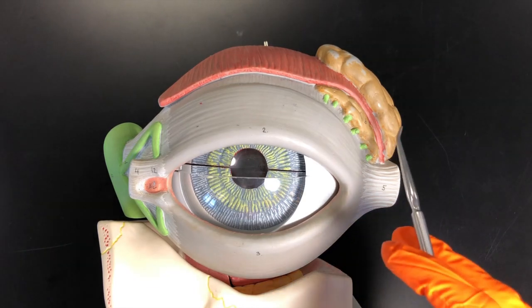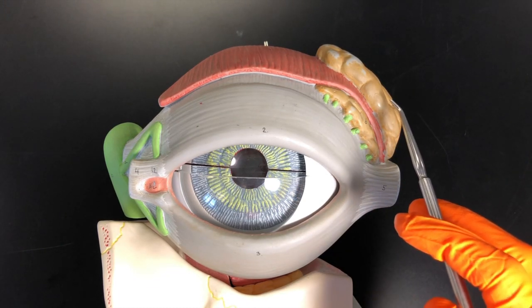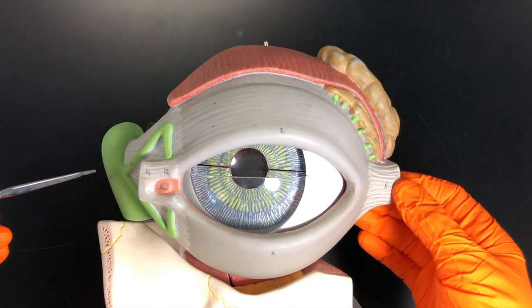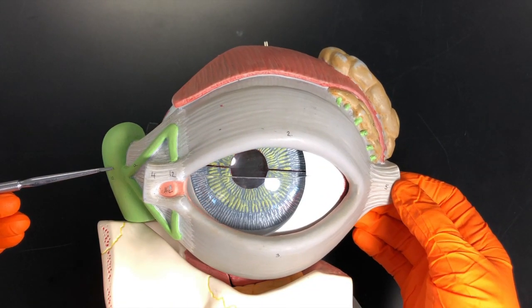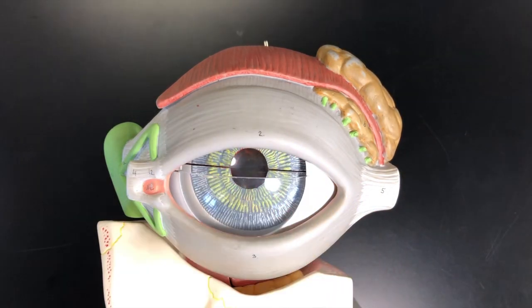So quick question here. If the lacrimal gland is lateral, then that means the lacrimal sac is medial. Lateral, medial. We're looking at the anterior portion of the eye. So which eye do we have here? Hopefully you said the left eye.